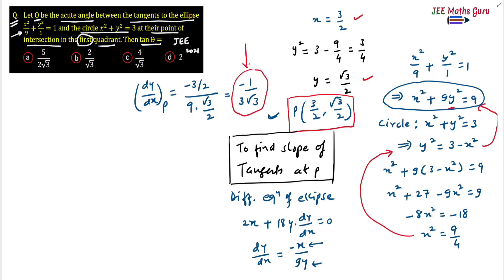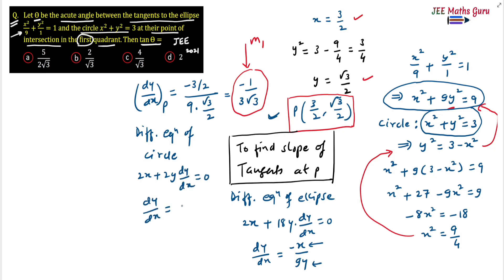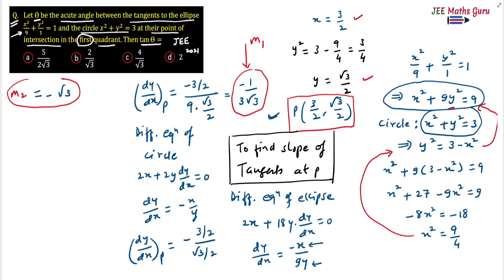Now we find m2, the slope of the tangent to the circle. Differentiating x² + y² = 3: 2x + 2y dy/dx = 0, so dy/dx = -x/y. At point P: m2 = -(3/2) / (√3/2) = -√3. So m2 = -√3.